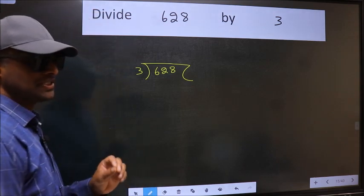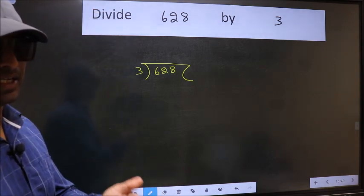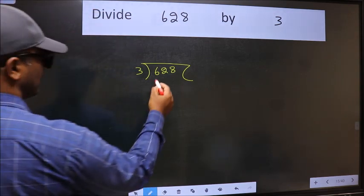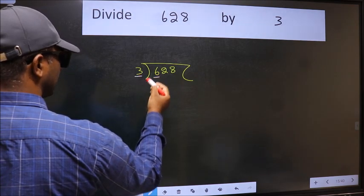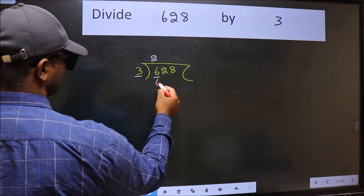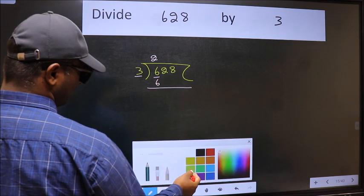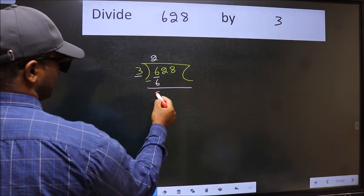This is your step 1. Next. Here we have 6 and here 3. When do we get 6 in 3 table? 3 times 2 is 6. Now we should subtract. We get 0.